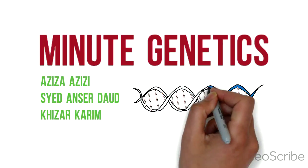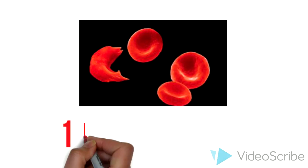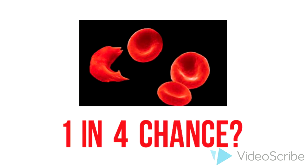Welcome to Minute Genetics. In this episode, we will clear up a common genetic misconception in today's society. What does it really mean when we say a child has one in four chances of contracting a disease?